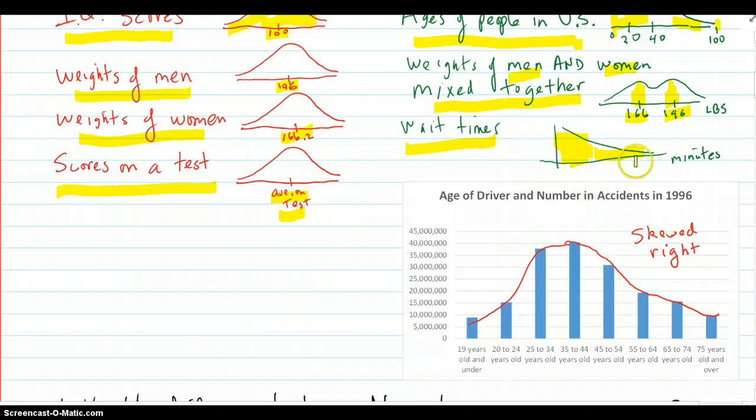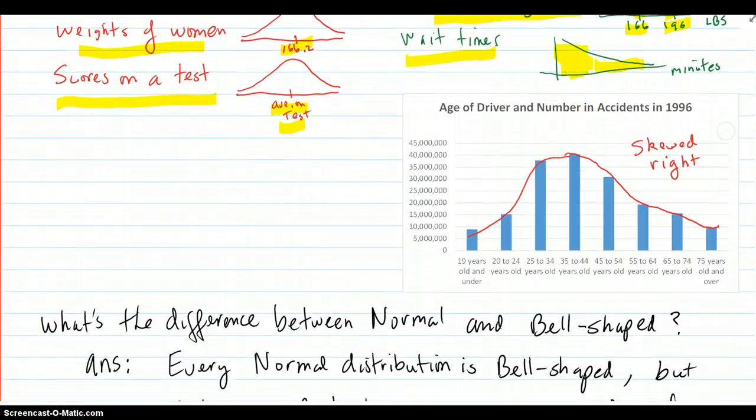Here's another non-normal example: the age of driver and number of accidents in 1996. Here's the age of the drivers. Looks like there were a lot of ages in here of people getting into accidents, and then it tapers down. These are just the raw numbers. You might have thought there'd be a lot here. The number of drivers would be another consideration. But on this graph, it's skewed to the right - not bell-shaped, not normal.